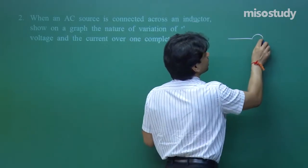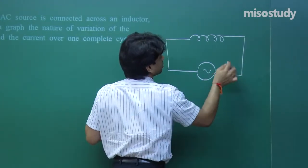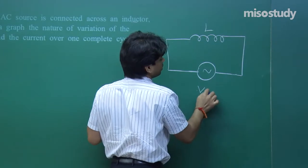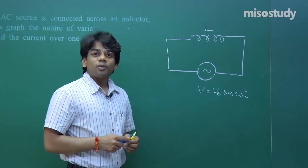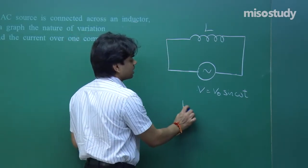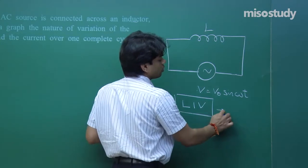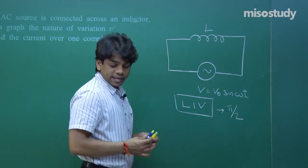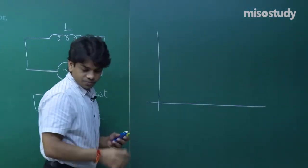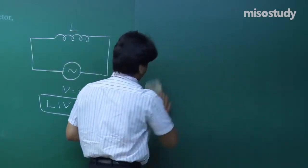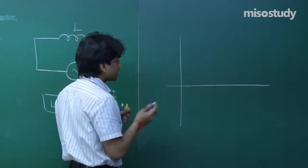The connection is: inductor connected to AC source, V = V₀ sin(ωt). In the case of an inductor, if you remember, voltage leads the current — remember LIV — the inductor voltage leads the current by a phase of π/2. So voltage is leading, and current has to lag.